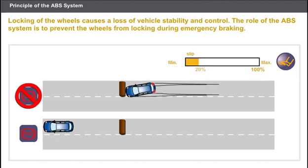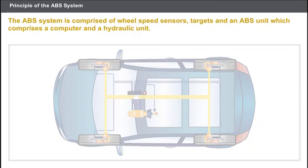The role of the ABS system is to prevent the wheels from locking during emergency braking. A slip value not exceeding 20% enables control of the vehicle to be retained. The ABS system comprises the following elements.